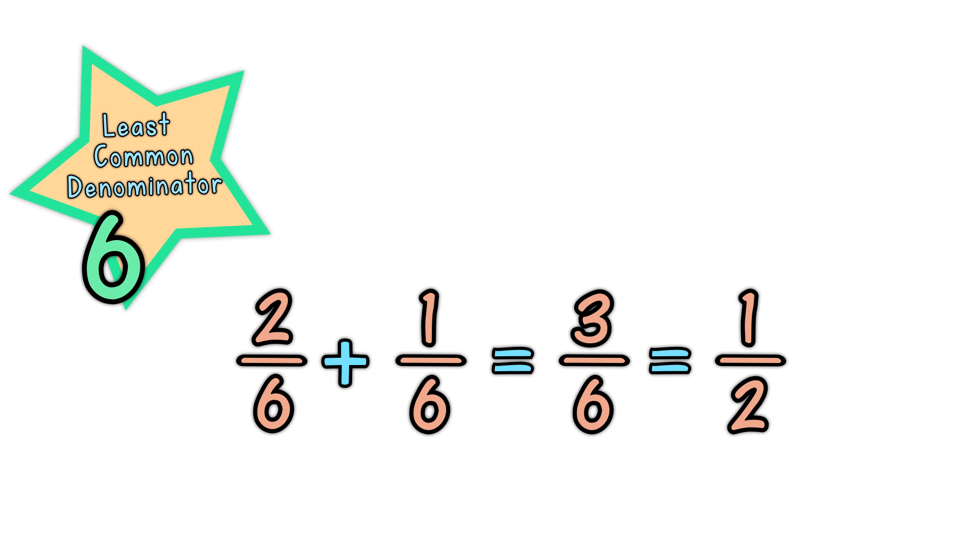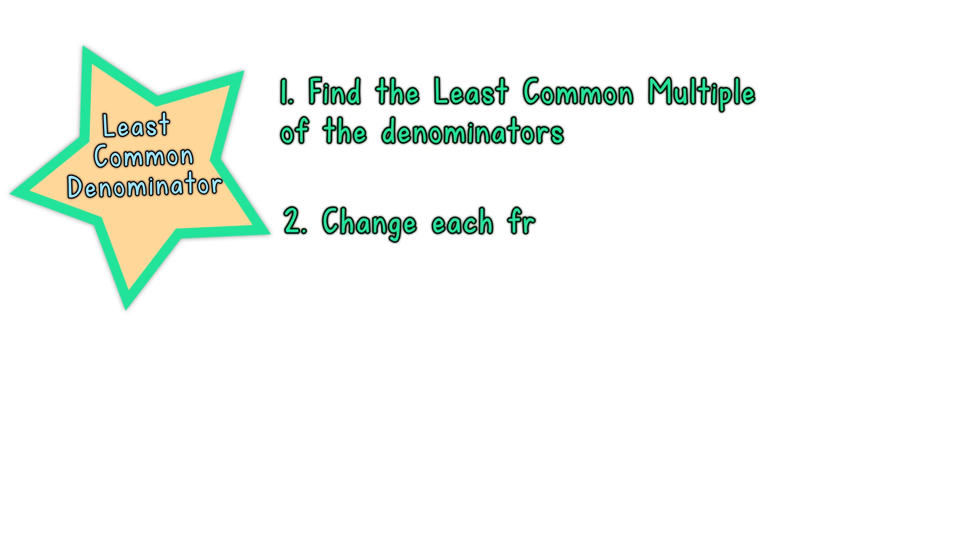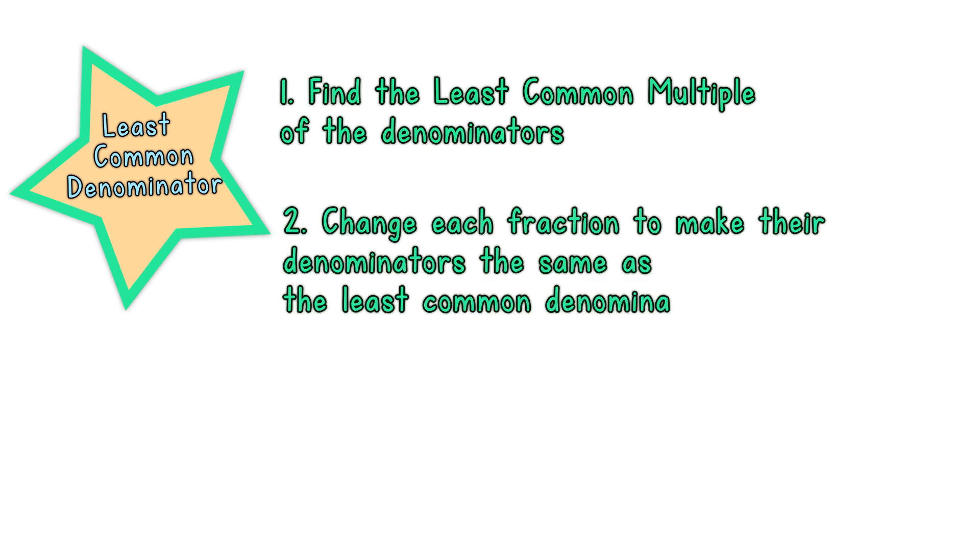Here are the steps to follow. Find the least common multiple of the denominators, which is called the least common denominator. Change each fraction using the equivalent fractions to make their denominators the same as the least common denominator. Then add or subtract the fractions as you wish.